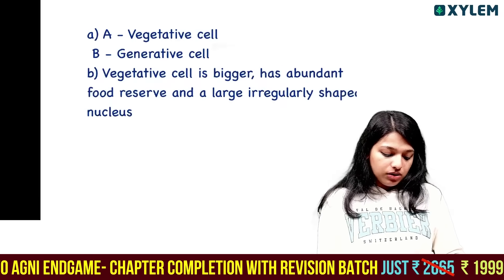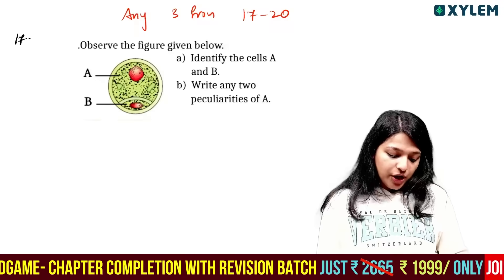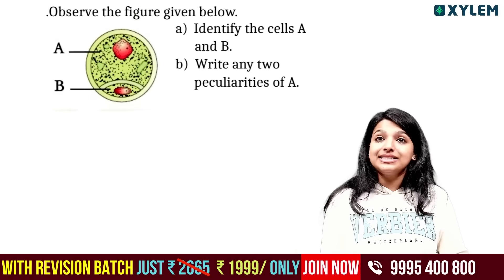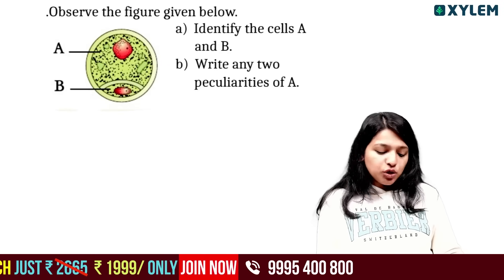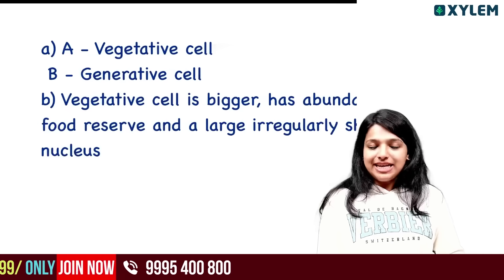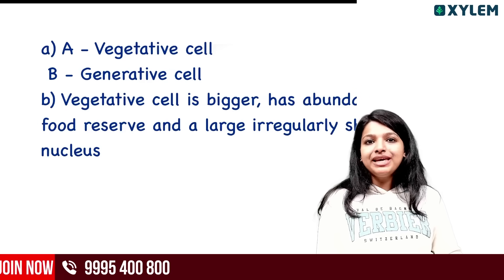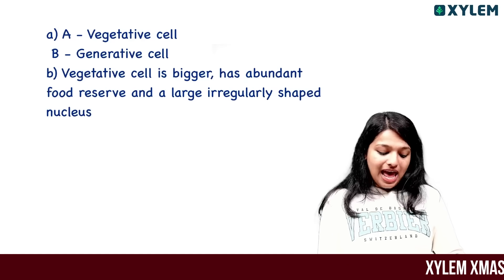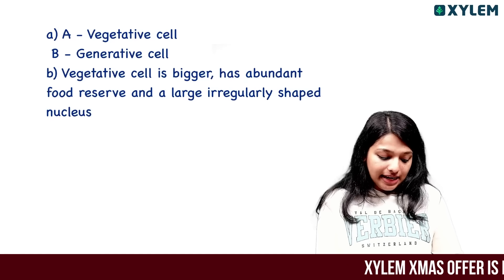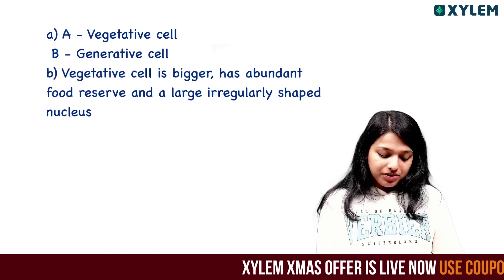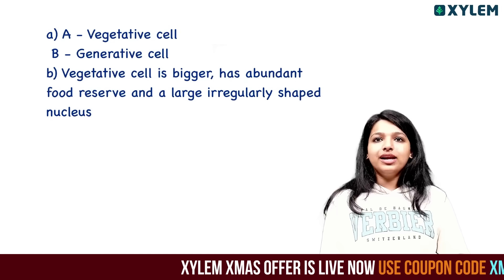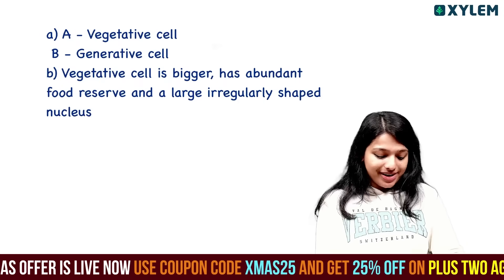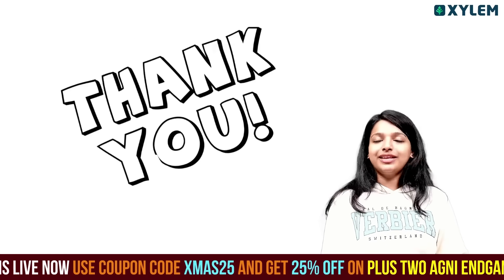Observe the figure given below. Identify cells A and B and write the peculiarities of A. Vegetative cell is A and B is the generative cell. The vegetative cell A is bigger, has food reserves, and is irregularly shaped. The nutrients are provided by the food reserves. Learn about these three things - in the four chapters, the most important questions have been discussed.